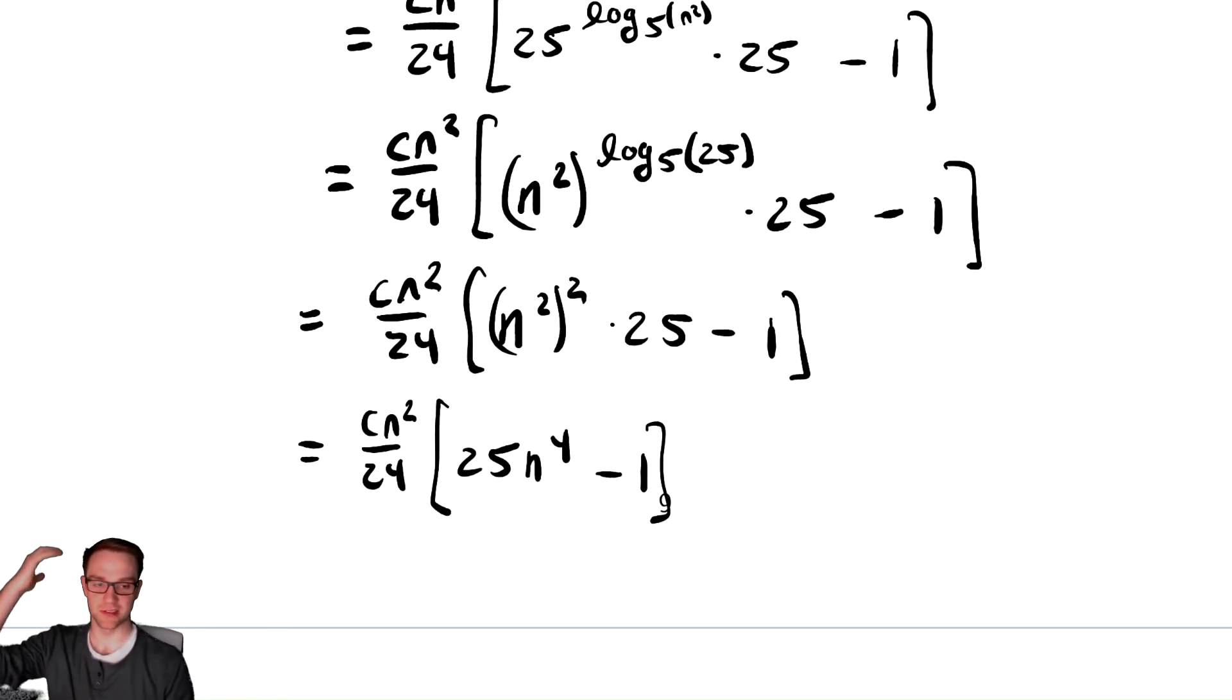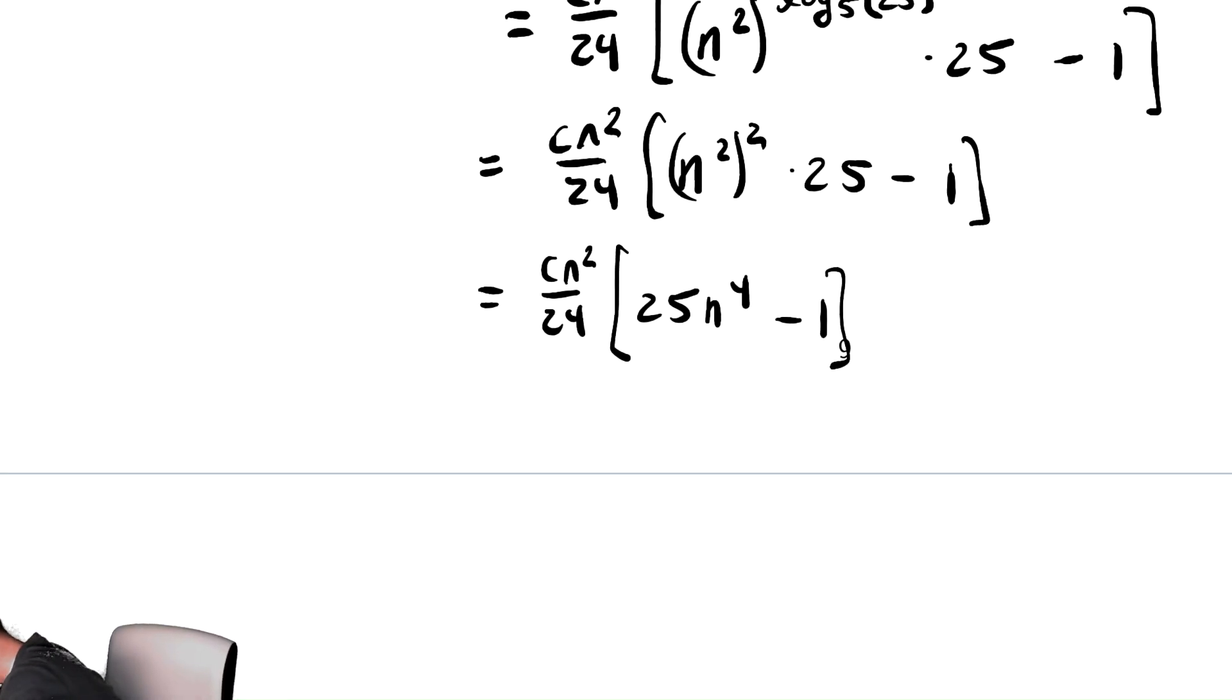So we have something that looks like n squared times something that looks like n to the 4th. Hopefully you can look at that and go, yeah, I bet that that's in theta of n to the 6th. So thus t of n is in theta of n to the 6th, which is my final complexity.